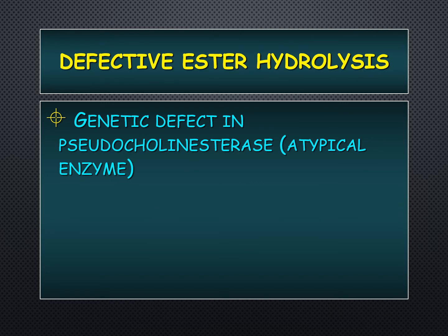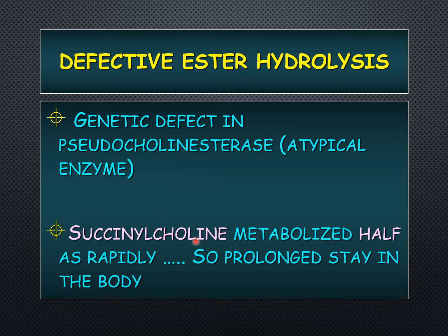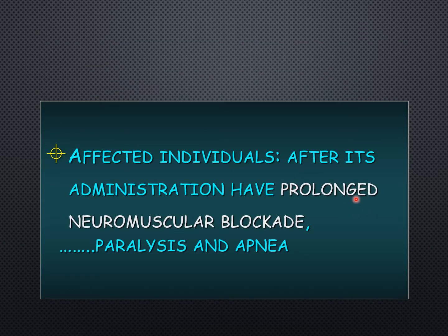Another pharmacogenetic example is defective ester hydrolysis, seen with a defect in the enzyme pseudocholinesterase, which is responsible for the metabolism of succinylcholine — a neuromuscular blocker used as an adjunct to general anesthesia for muscle paralysis and relaxation during surgery. If there is a defect in this enzyme, there is prolonged stay of succinylcholine in the body, leading to prolonged neuromuscular blockade, paralysis of respiratory muscles, apnea, and death.